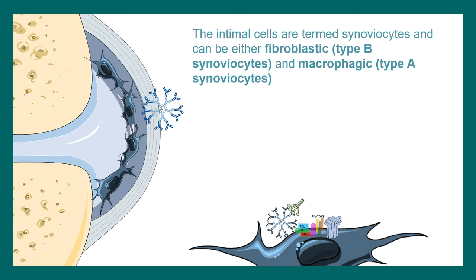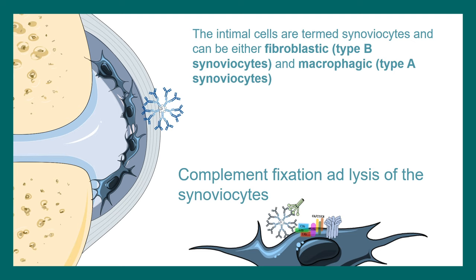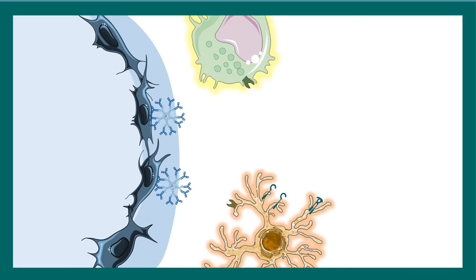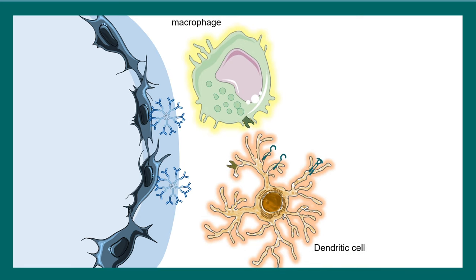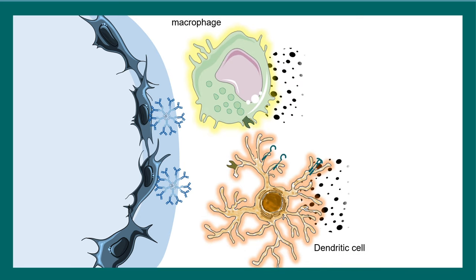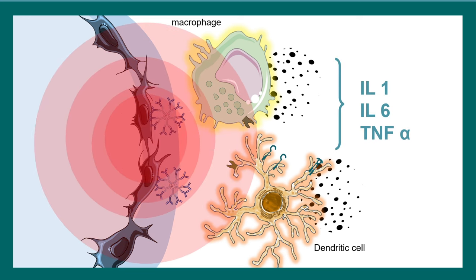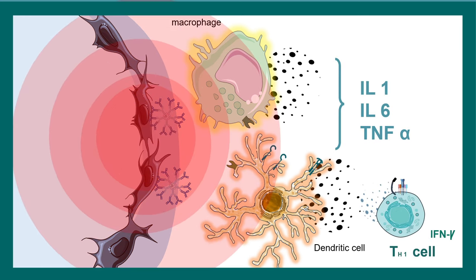IgM autoantibodies lead to complement fixation and lysis of synoviocytes. Alongside this mechanism, several cell types are involved in disease progression, such as macrophages, dendritic cells, and Th1 subtype cells, which trigger the inflammatory response in the joints.